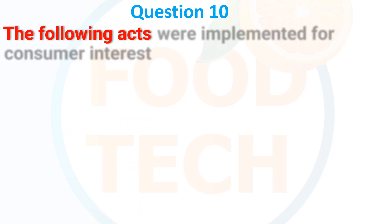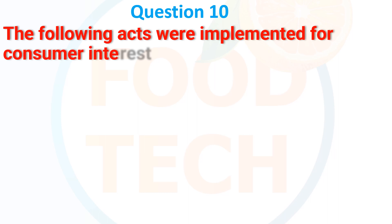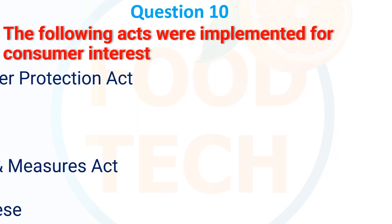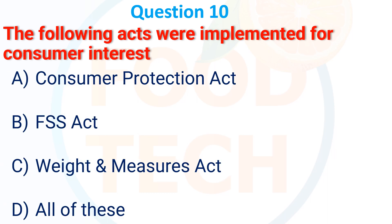The following acts were implemented for consumer interest: A. Consumer Protection Act, B. FSS Act, C. Weight and Measure Act, D. All of these. The answer is D. All of these.